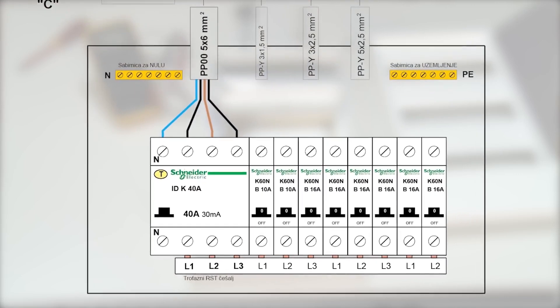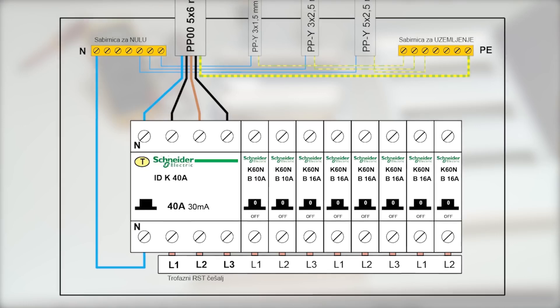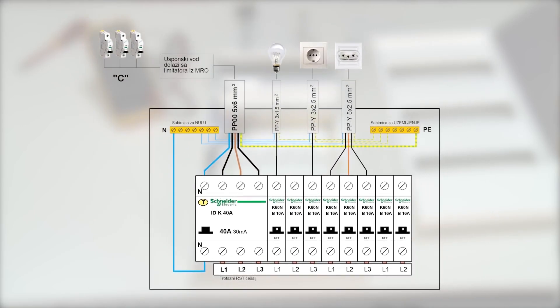The neutral conductor is taken out of the RSD device and led to the neutral bus bar and the protective conductor, for example the grounding conductor, is led directly to the grounding bus bar. We now supply consumers directly from the output of circuit breakers.